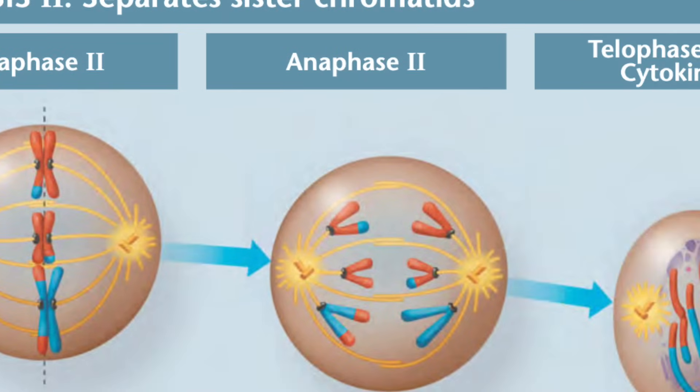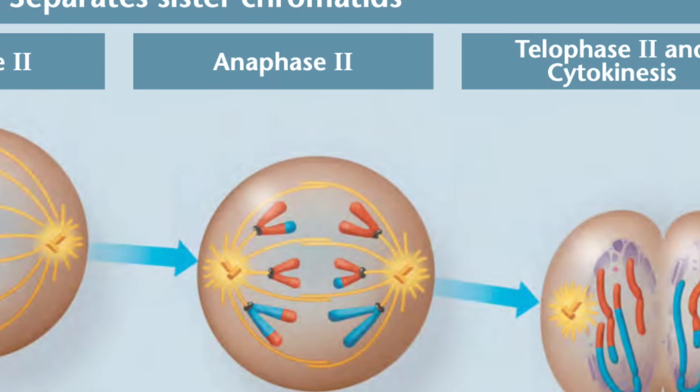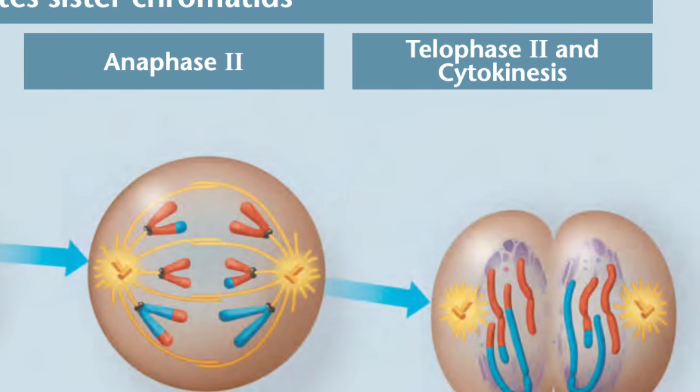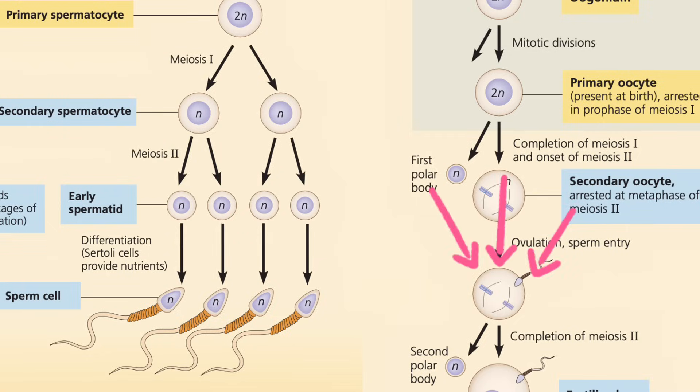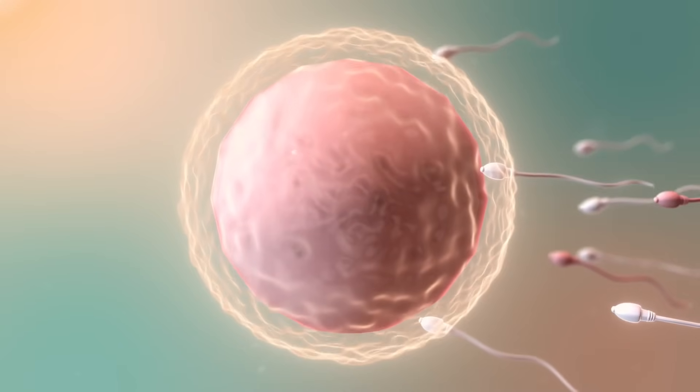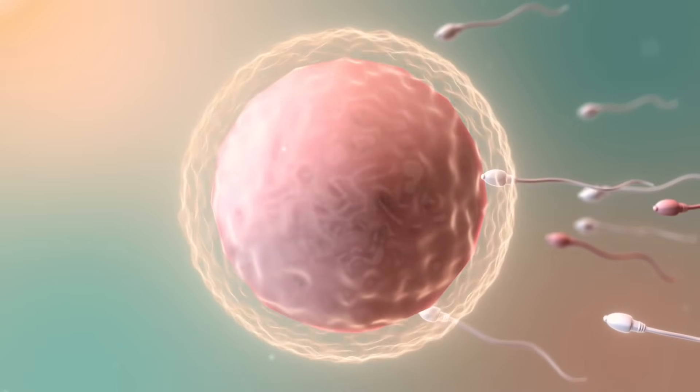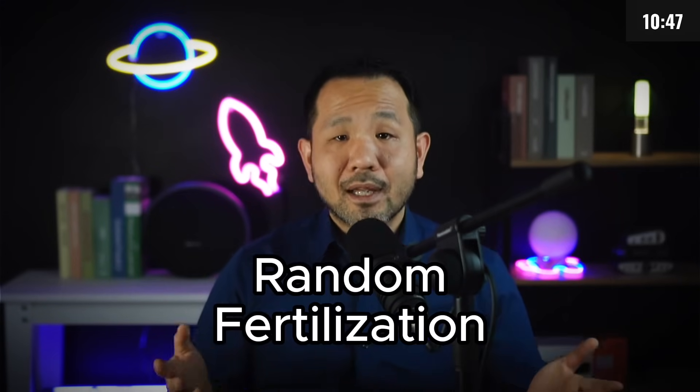Anaphase II then sees the sister chromatids separating, while telophase II and cytokinesis mark the end of the entire process. Keep in mind that there is a slight difference between the formation of sperm and eggs, with meiosis producing four sperm cells but only one egg cell — because the eggs need way more material in order to be viable. And for that last bit of variability, a sperm cell and an egg cell would randomly meet up in the wild, creating one very unique individual through what we call random fertilization.